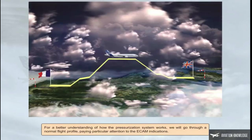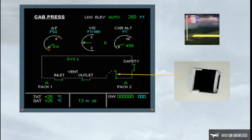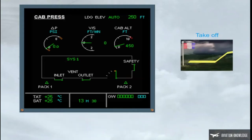For a better understanding of how the pressurization system works, we will go through a normal flight profile, paying particular attention to the ECAM indications. When the aircraft is on the ground before the flight, the outflow valve is fully open. There is no differential pressure and there is no vertical speed. We can also notice that the cabin altitude is indicating the field elevation of the departure airfield. During the take-off roll, the system controller signals the outflow valve to close slightly in order to pre-pressurize the aircraft, to avoid a pressure surge at rotation.